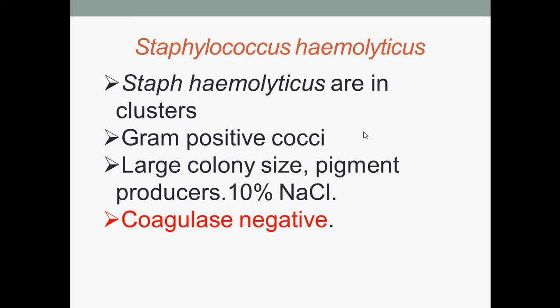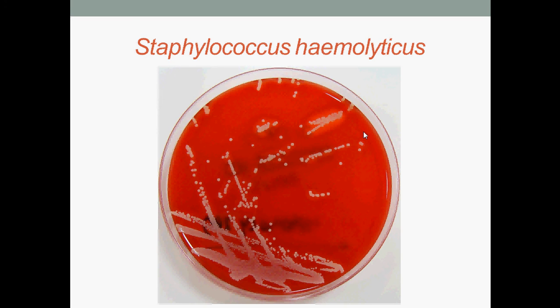Next, Staphylococcus haemolyticus. Staphylococcus haemolyticus are in clusters. They are Gram-positive cocci and their colony size is large and they are pigment producers. They grow in the presence of 10% sodium chloride. They are coagulase negative, which means they do not have the coenzyme coagulase which causes the fibrin in blood plasma to clot. Here we have colonies of Staphylococcus haemolyticus growing on Columbia horse blood agar.